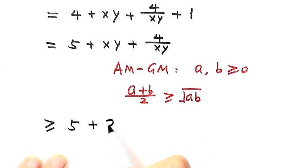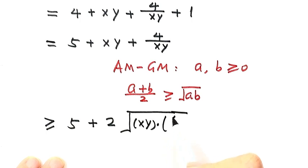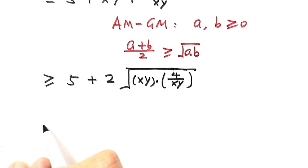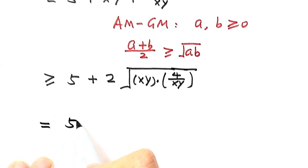So then plus 2 times square root of xy times 4 over xy. Then simplify the part under the square root.